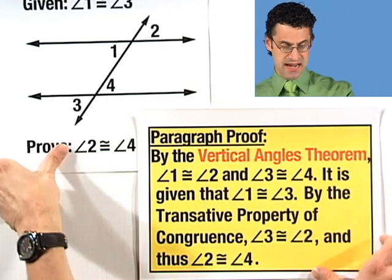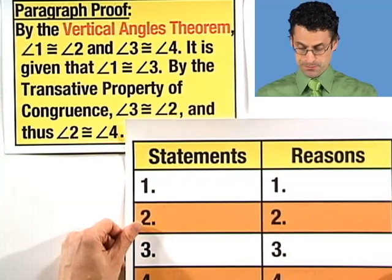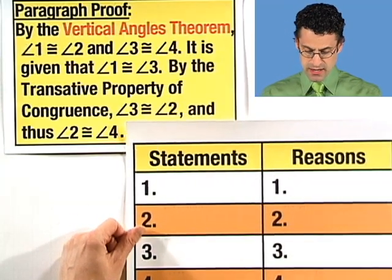All right, let's see if we can now take this nice narrative, and this is, like I said, how real mathematicians prove real theorems, and see if we can convert it to a somewhat more systematic approach that we've been using, which are the two column proofs. So statement and reason, here we go.